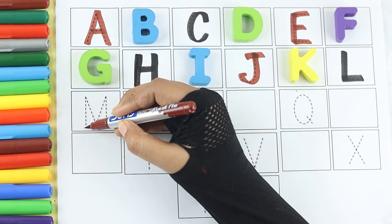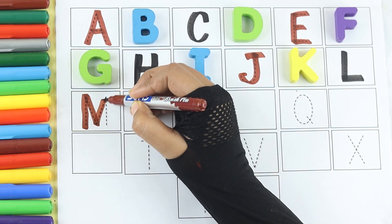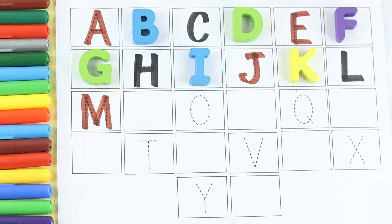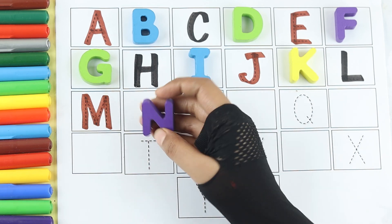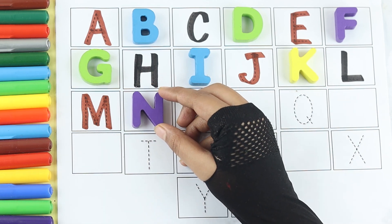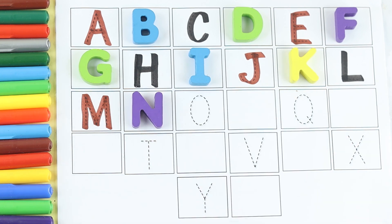Brown color. M. M for monkey. Violet color. N. N for nest.